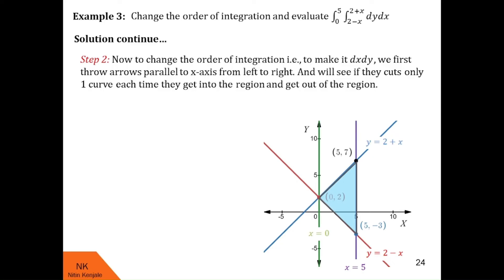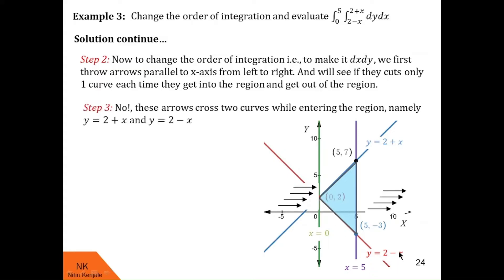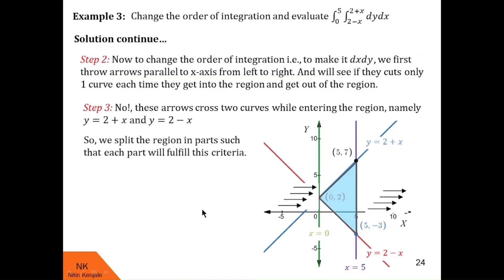Now in step 2, to change the order of integration to dx dy, we throw arrows parallel to the x-axis from left to right and check if they cut only one curve each time while entering and exiting the region. What we see is that some arrows enter the region by crossing y = 2 plus x and some by crossing y = 2 minus x. So these arrows cross two curves while entering the region, namely y = 2 plus x and y = 2 minus x. Therefore, we have to split the region into parts such that each part fulfills this criterion.